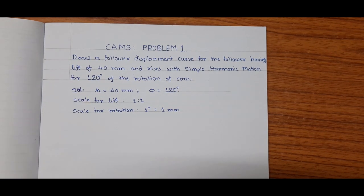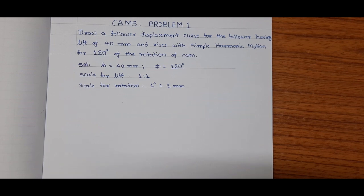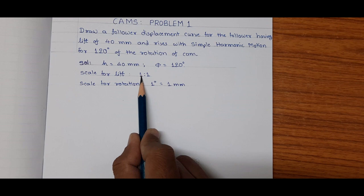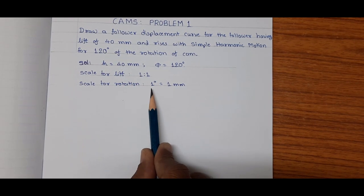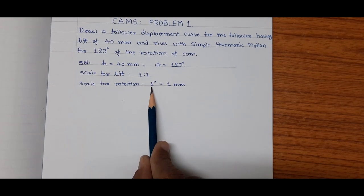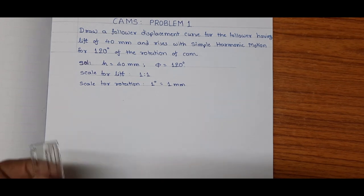For this, let us construct a rectangle having dimensions: height equal to 40 mm as scale 1:1 of the lift, and length equal to 120 mm as scale 1 degree equals 1 mm, to the left side. Here we go.